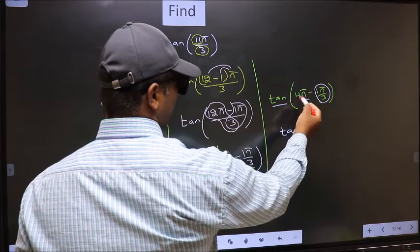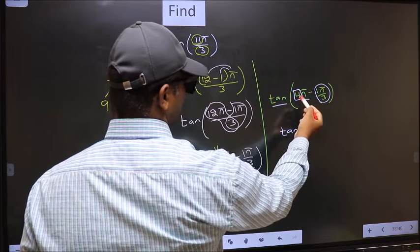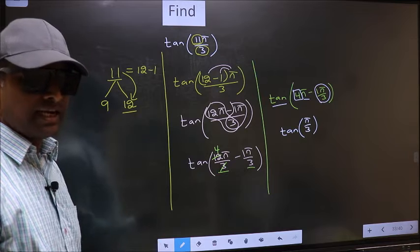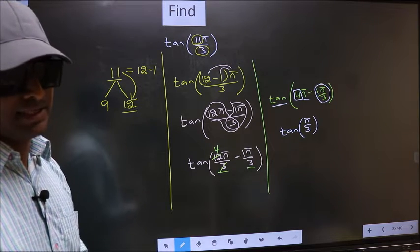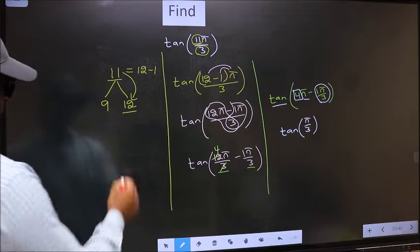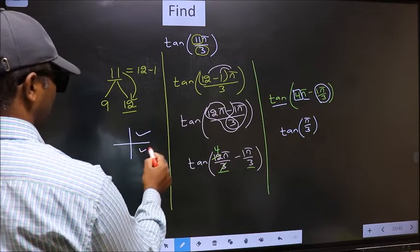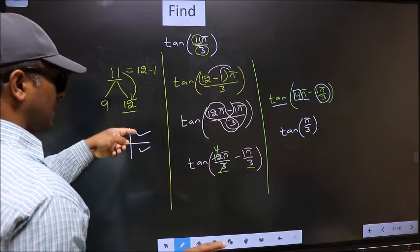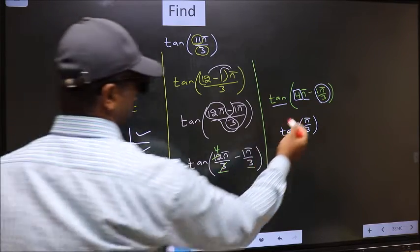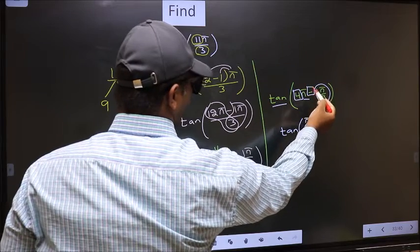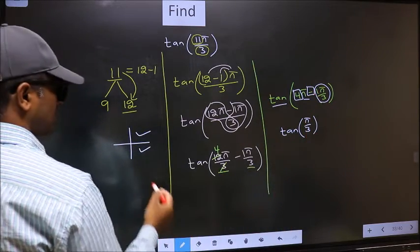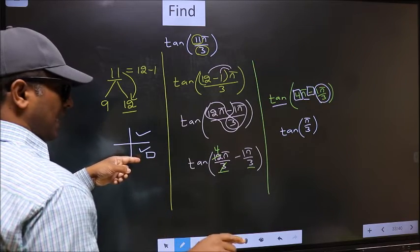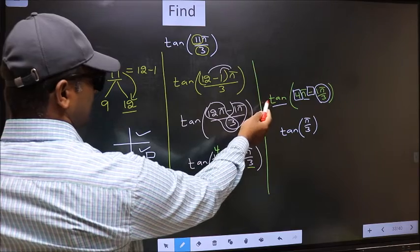To answer that, you should look at the number before π, which is 4. And 4 is even. And all the even multiples of π, they lie either in the first or in the fourth quadrant. So now to select the quadrant, we should look at this symbol. Here we have negative, that means the angle lies in the fourth quadrant. And in the fourth quadrant, tan is negative.